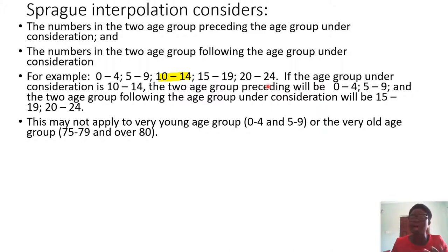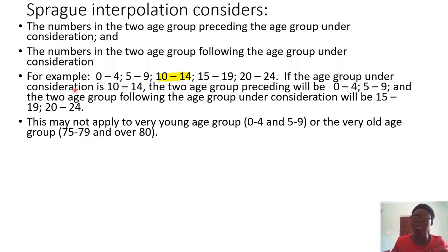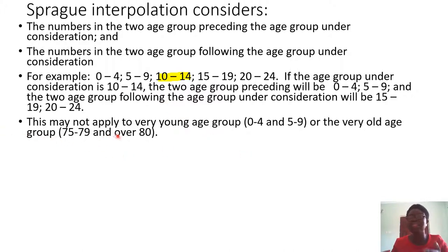Note that this may not apply to age 0 to 4 and age 5 to 9. The reason is that if you look at 0 to 4, zero is the base — no other group comes before it. And for 5 to 9, instead of having two preceding groups, you have only one: 0 to 4. The same situation applies when working with ages 75 to 79 and 80 and above, where you may not have the required two groups.